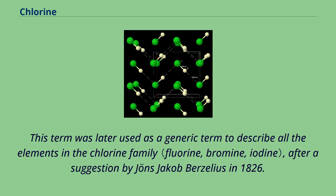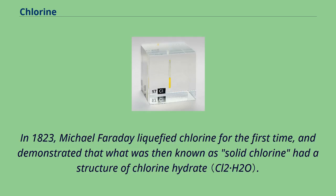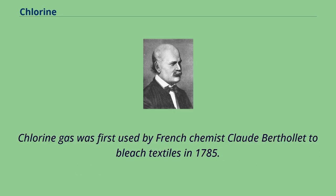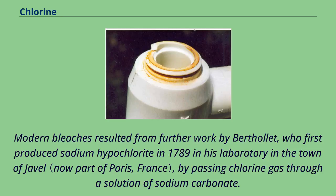In 1823, Michael Faraday liquefied chlorine for the first time, and demonstrated that what was then known as solid chlorine had a structure of chlorine hydrate. Chlorine gas was first used by French chemist Claude Berthollet to bleach textiles in 1785. Modern bleaches resulted from further work by Berthollet, who first produced sodium hypochlorite in 1789 in his laboratory in the town of Javel, by passing chlorine gas through a solution of sodium carbonate.